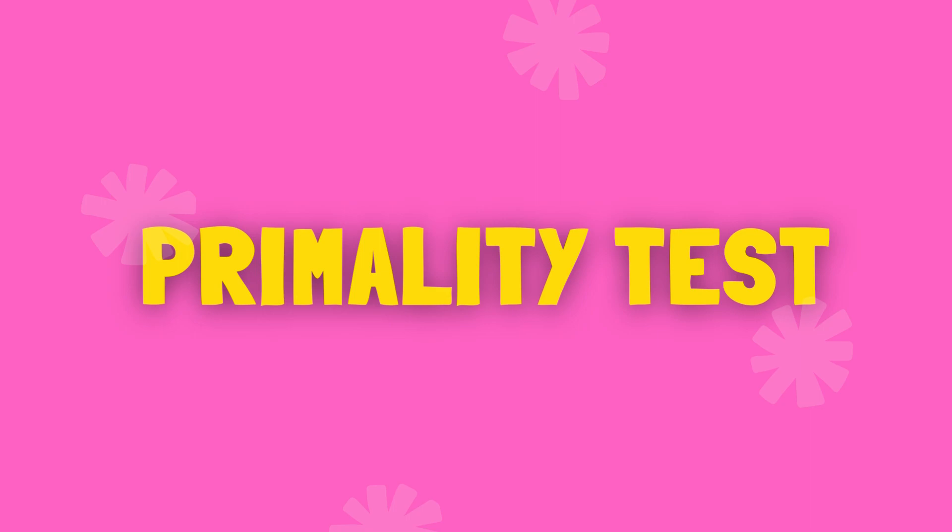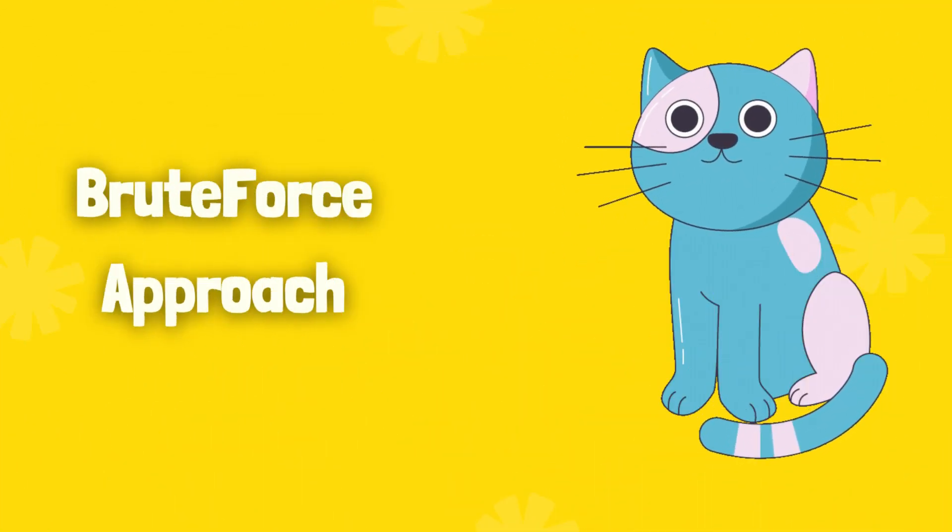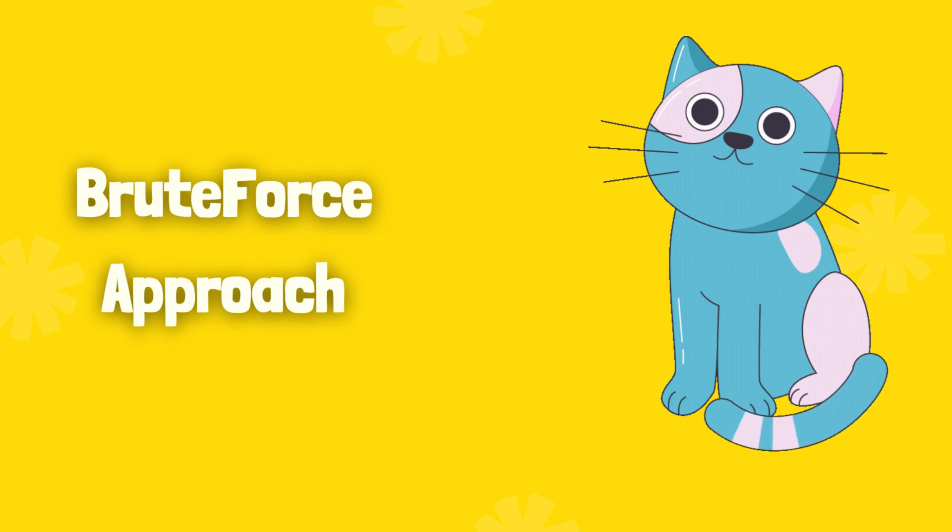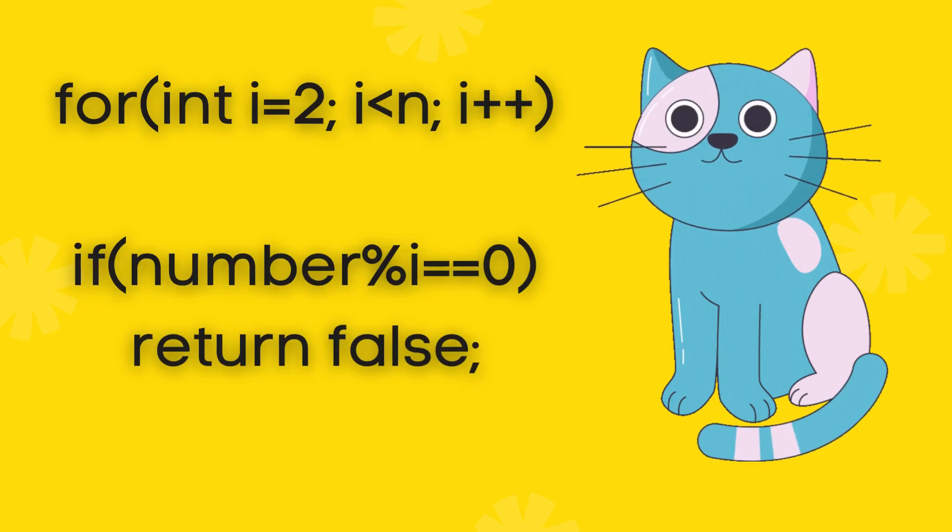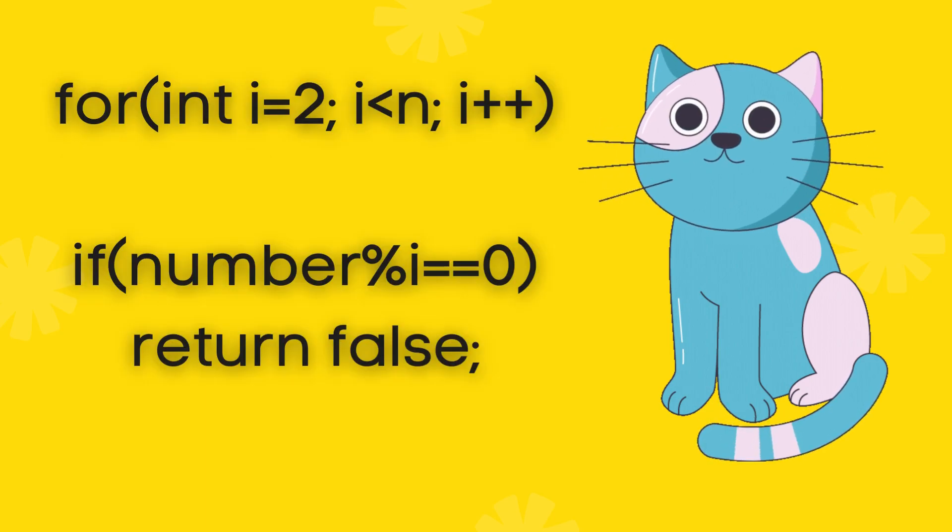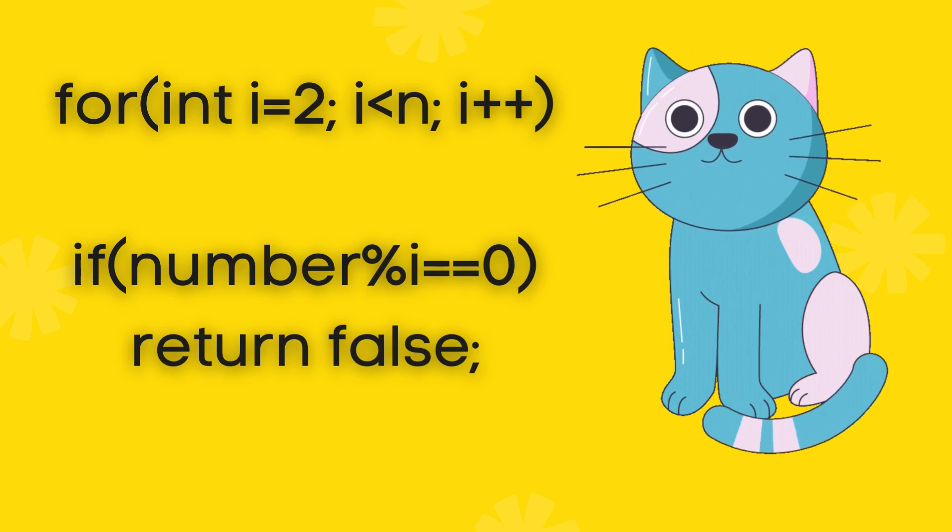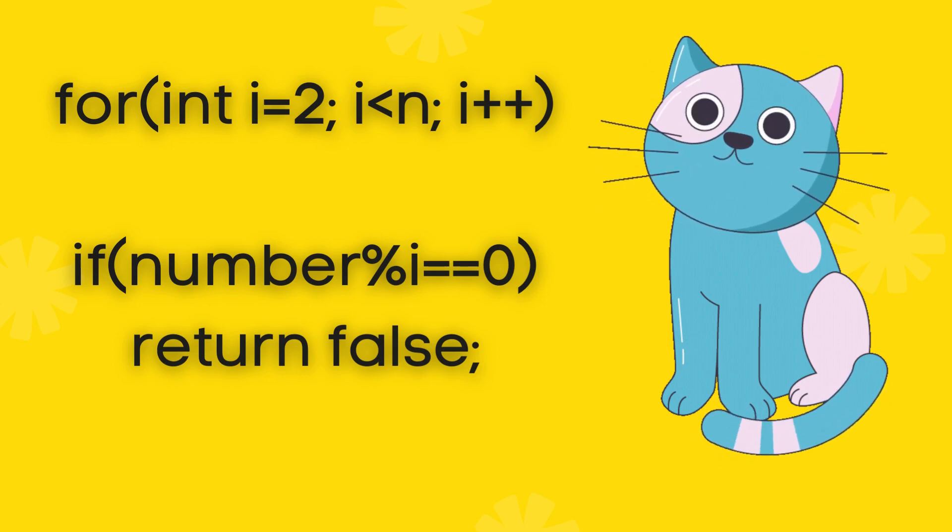In this video we will discuss different approaches to check primality of any given number. Let's move into our first approach: the brute force approach. In brute force, we check for every number between 2 and n-1 that divides n. If any number within this range divides the number, then return false—that is, the number is not prime. Otherwise, return true—the number is prime.